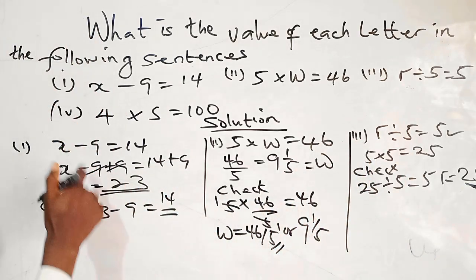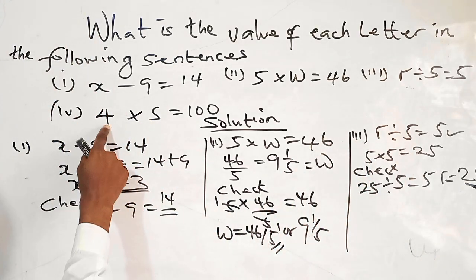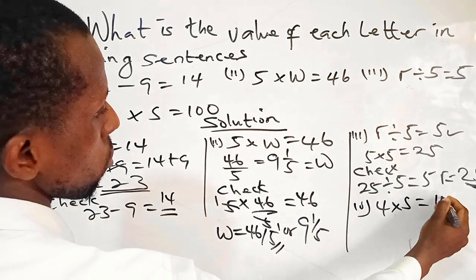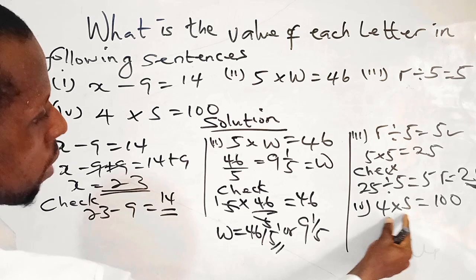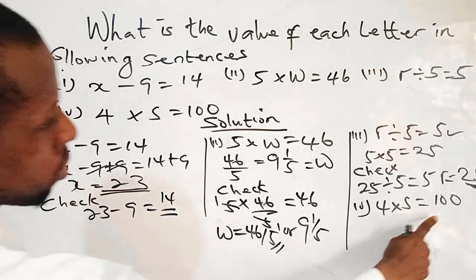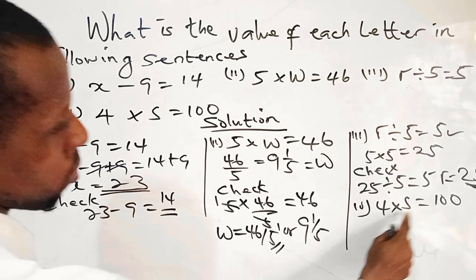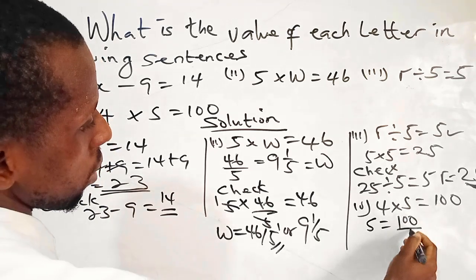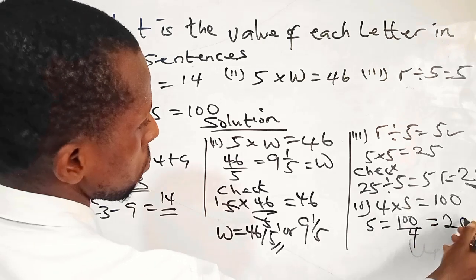So for the last one, which is number 4, I have 4 times S equals 100. So what do you multiply with 4 to give us 100? The simple way to do this is, since we have multiplication, we do division. So we have S equals 100 divided by 4. That should give us 25.